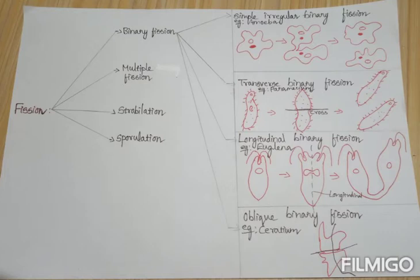The second type of binary fission is transverse binary fission. Here, the plane of division runs along the transverse axis of the individual. You can remember this in elongated-shaped organisms where a cross section is formed in their body, followed by division of nucleus and cytoplasm, and finally the body is divided into two. Examples: paramecium and planaria.